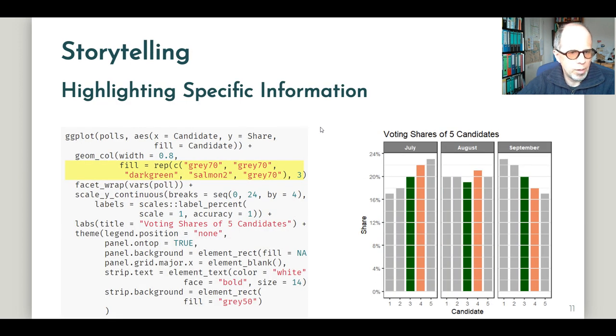I think this is an element of storytelling, helping the reader focus on these aspects that we want to focus on as well. And we can help them visually. So a common technique is to gray out the information that you want to still show, but that you don't want the reader to focus on. And use color to focus on those aspects that you find more important. So here we're using gray for candidates one, two and five and dark green for our candidate number three and salmon for candidate number four. And now the comparison is easier to make and it's easier to focus on these candidates across the panels.